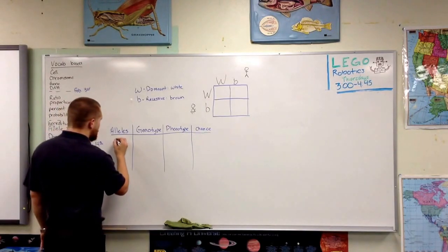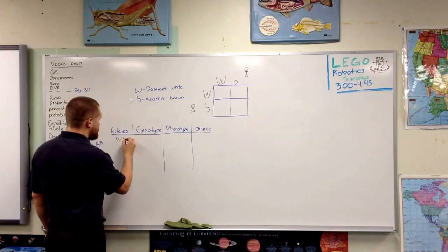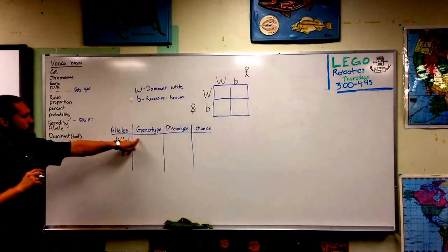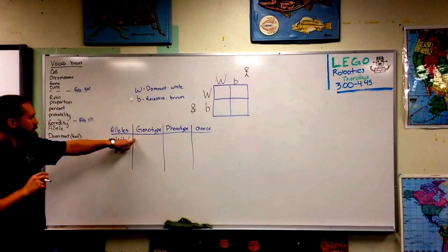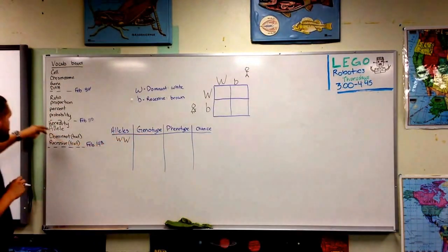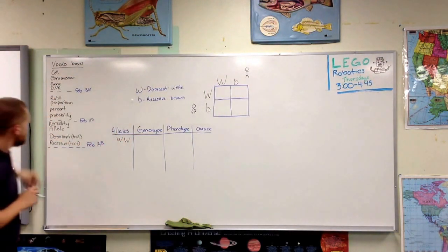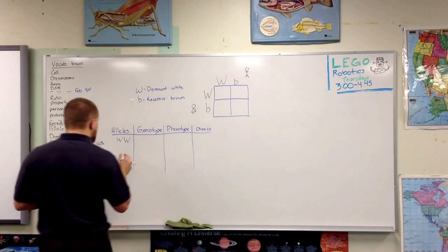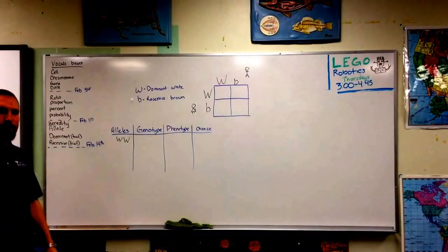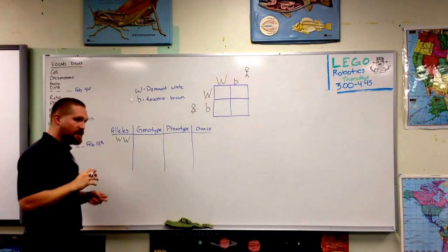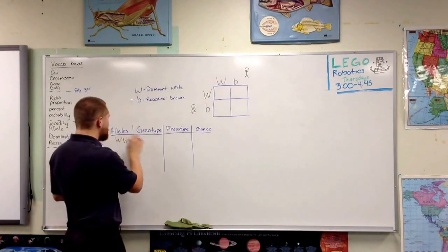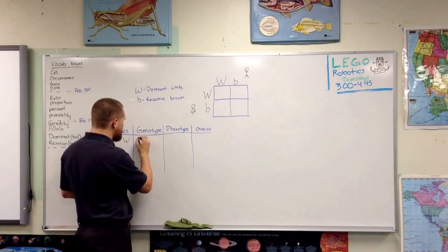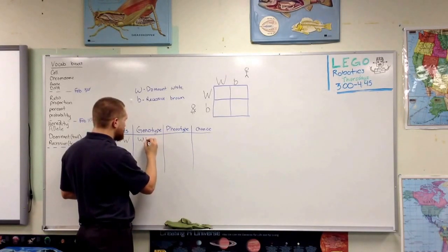We can have two dominant alleles. The genotype — you should have this on your vocab boxes — the genotype is the genetic makeup of something. So what do the genes look like that cause a trait? The genotype is going to be the same as the alleles here: dominant, dominant.